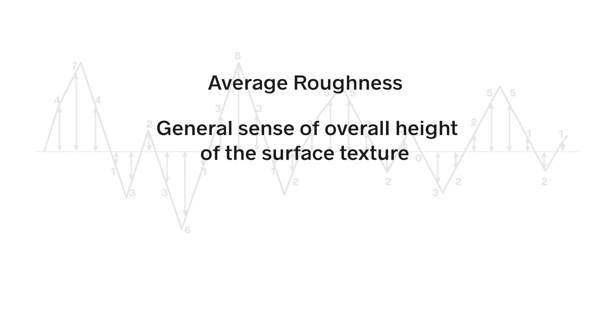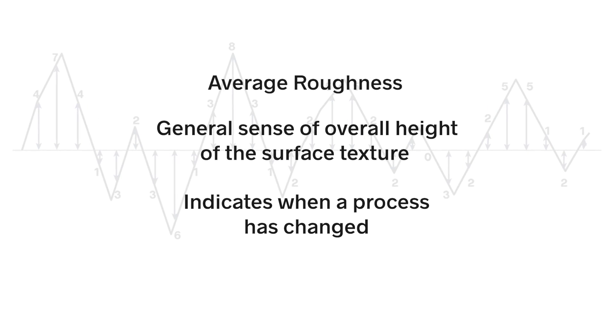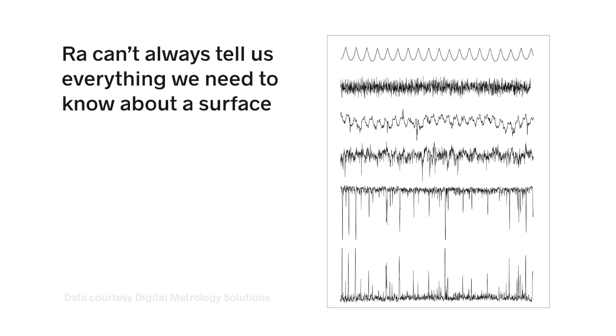Average roughness can provide a general sense of the overall height of surface texture. It can also indicate when a process has changed in some significant way. But RA can't always tell us everything we need to know about a surface.